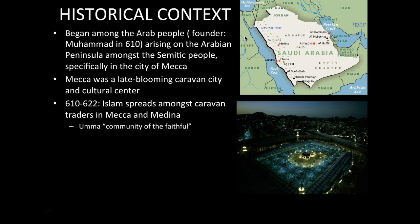Between 610 and 622, Islam spread amongst caravan traders in Mecca, leading to the unification of various tribal peoples and clan groups. Muhammad wanted to unify all Arabian peoples and remove tribal-based polytheism, so he created the ummah — meaning 'the community of the faithful.' The ummah, or Islamic community, united people based on religion rather than ethnicity or tribe.